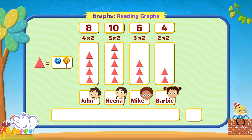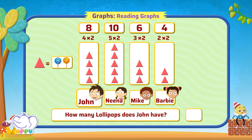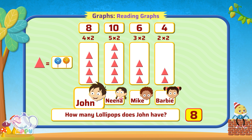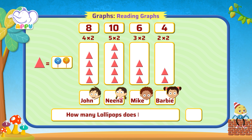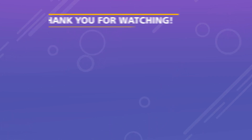Let's look at the picture graph and answer the questions given below. How many lollipops does John have? John has eight lollipops. How many lollipops does Mike have? John has eight lollipops.